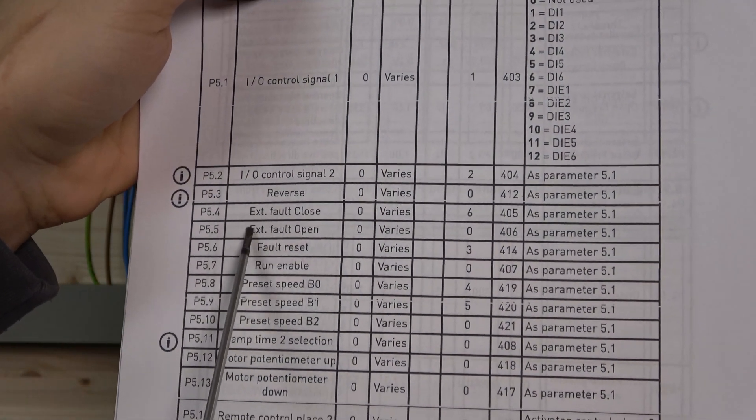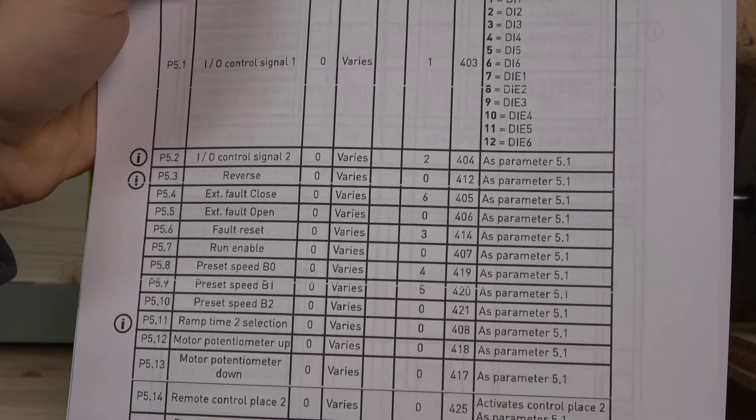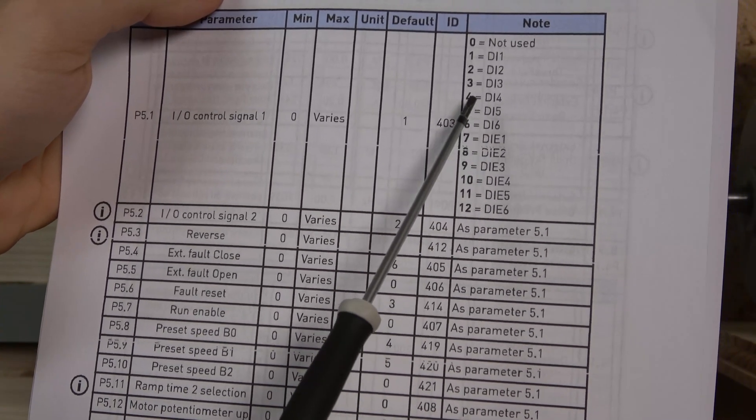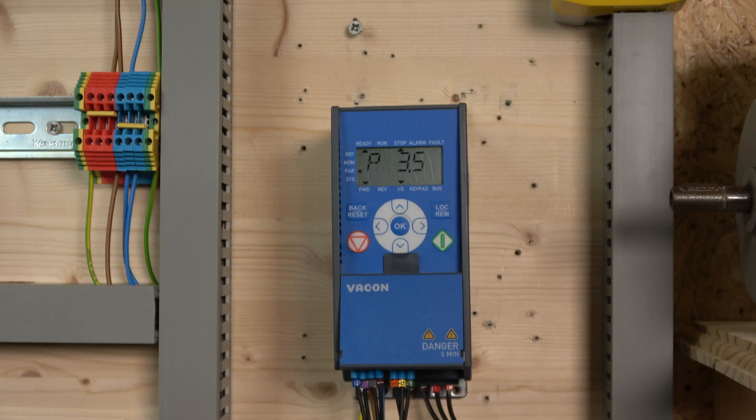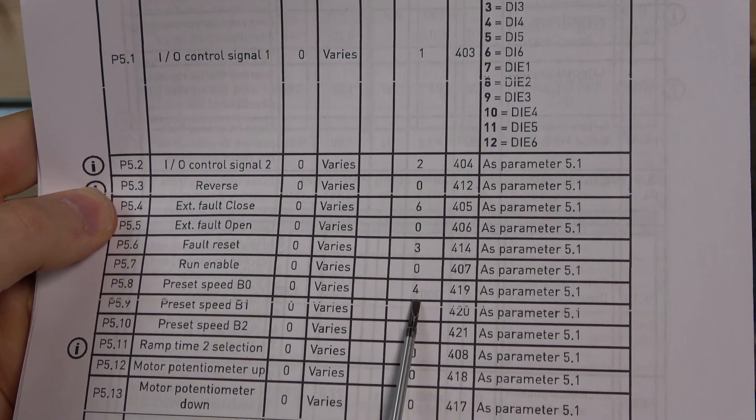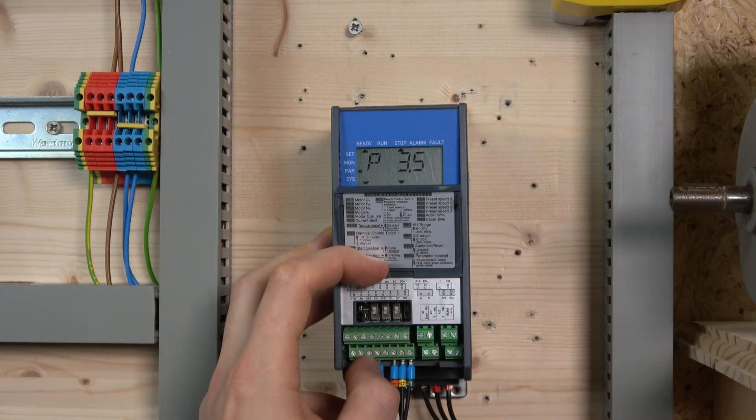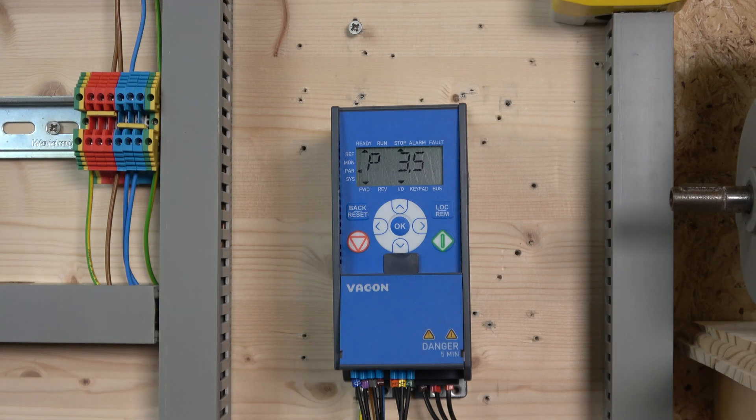You can see all the names: reverse, fold, close, open, fold reset, run enable, preset speeds, run, ramp down. You assign which input you're going to use. I used parameter 5.8 and changed the 4 to 3. That changes it so I can send the preset speed or jog to terminal digital input 3. That's how you change your I/Os.